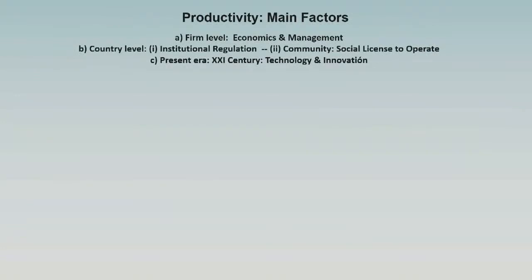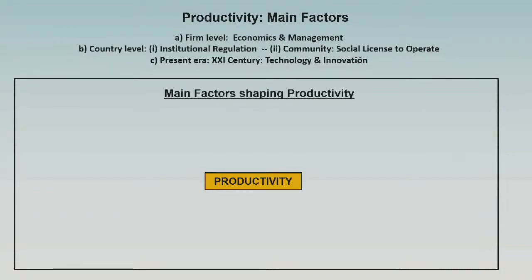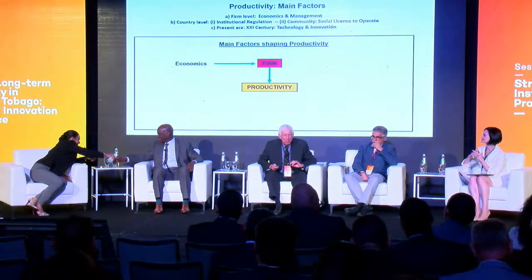Starting with productivity: the main factors shaping it begin at the firm level. The prevailing view from economics looks at the firm as a closed box — inputs go in, goods come out, and the relationship between output and inputs defines productivity. But management does the opposite — it opens up the firm and examines what the general manager does, how incentives are provided, and how decisions flow from top to bottom.